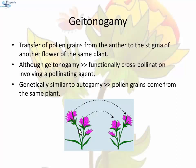Geitonogamy: Transfer of pollen grains from anther to the stigma of another flower of the same plant. Although geitonogamy is functionally cross pollination involving a pollinating agent, genetically it is very similar to autogamy since the pollen grains come from the same plant.